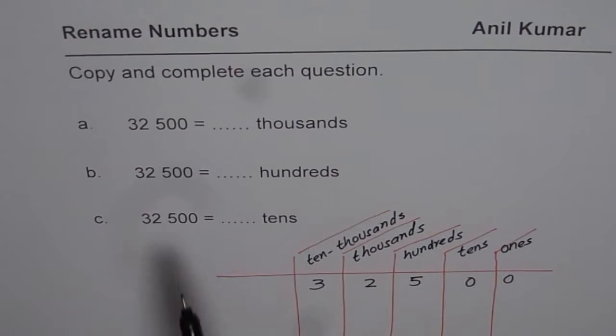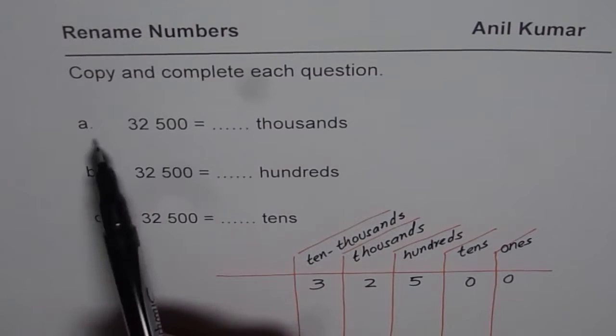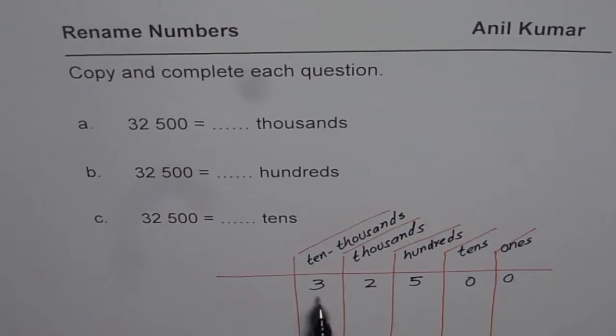When the numbers are big, you can start writing from the rightmost side. So zero, zero, five, two, three. And now you read it as 32,000 or three ten thousands, two thousand, five hundred. That is how you could read this number.